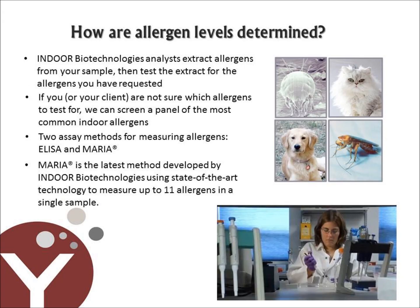How are allergen levels determined? Laboratory analysts at Indoor Biotechnologies use an extraction process to remove allergens from your sample and then test the extract for the allergens you've specified. Typically, you will want to test for allergens that the homeowner or building occupant is sensitized to. If you are not sure which allergens to test for, we can screen a panel of the most common indoor allergens. Indoor Biotechnologies offers two assay methods for measuring allergens: ELISA and MARIA. ELISA is a method developed in the 1970s and is used for measuring a variety of substances, customized for allergen detection. MARIA is a newer method developed by Indoor Biotechnologies that uses state-of-the-art technology and allows us to measure multiple allergens in a single test.